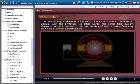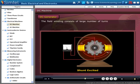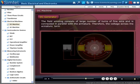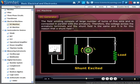In shunt excitation, the field winding consists of large number of turns of fine wire and is connected in parallel with the armature. Therefore, the voltage across the armature terminals and the shunt field is the same, and it is for this reason that a shunt field may be called a voltage operated field.